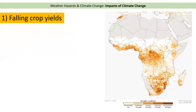Crop yields have fallen in many parts of the world because of climate change. On this map you can see Africa, and all of the areas shown in orange are areas that have experienced drought. We can see lots of drought being experienced in many parts of central Africa and southern Africa, as well as Morocco in the north.